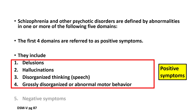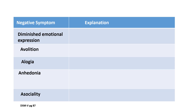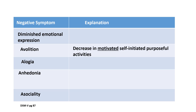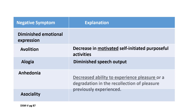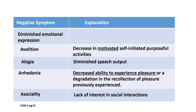The remaining symptoms are called negative symptoms. These include diminished emotional expression, avolition, alogia, anhedonia, and asociality. Avolition means lack of motivation; alogia means lack of speech; anhedonia refers to the inability to experience pleasure; and asociality refers to lack of interest in social interactions. So psychotic disorders are expressed in terms of both positive and negative symptoms.